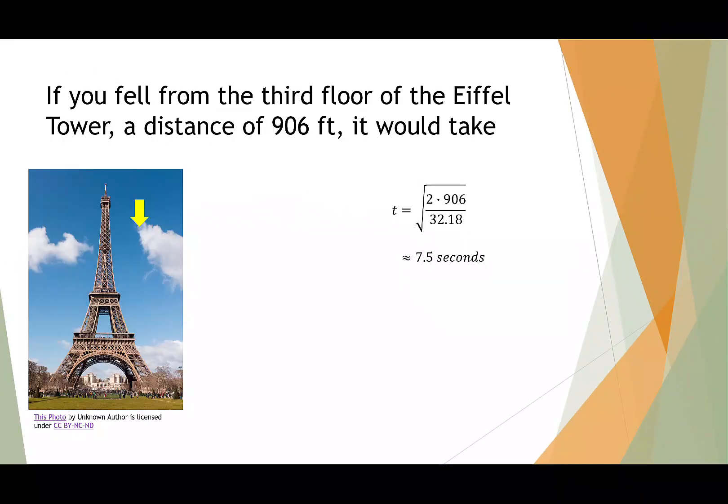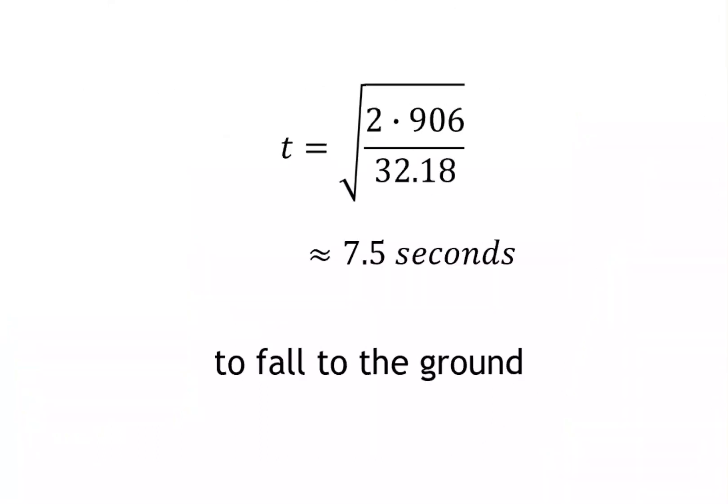Let's say you fell from the third floor of the Eiffel Tower. This is a distance of 906 feet. It would take t equals the square root of 2 times 906 feet divided by 32.18. If you throw that in a calculator, it tells us it'll take about 7.5 seconds to fall to the ground.